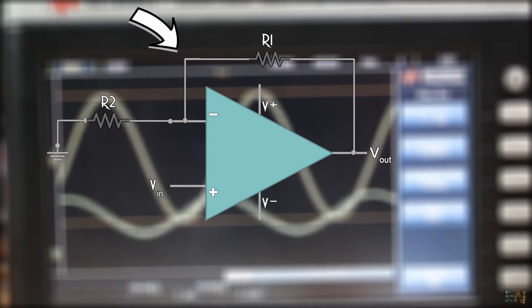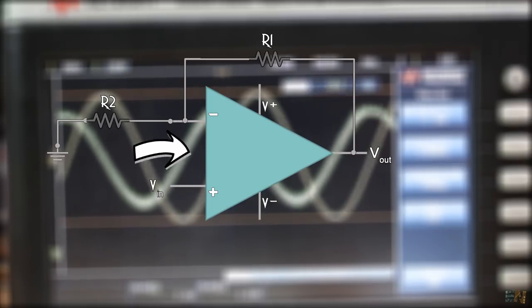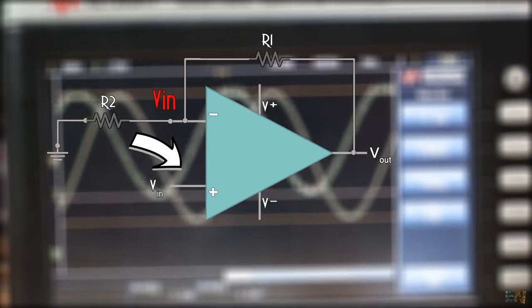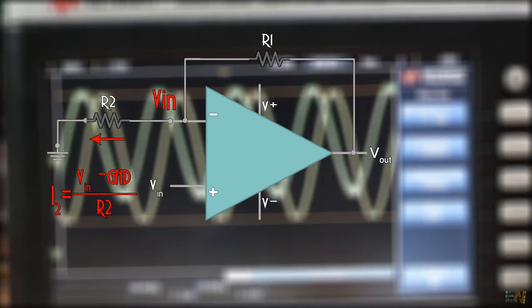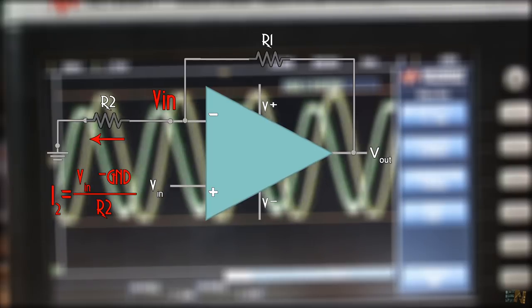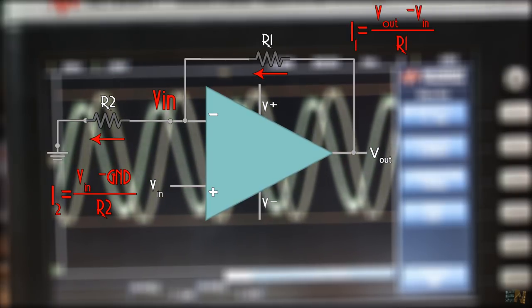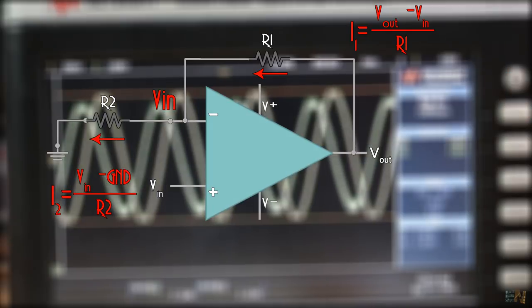Now, as before, the negative pin value is the same as the positive input. In this case, let's call it Vin. The current that passes through R2 is Vin minus ground, divided by R2. And the current through R1 is Vout minus Vin, divided by R1.